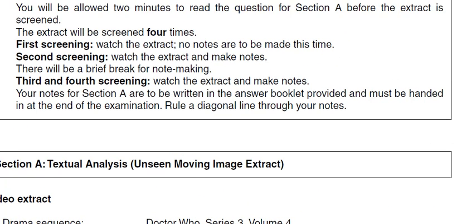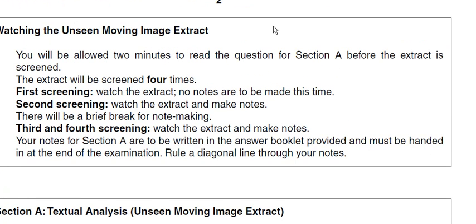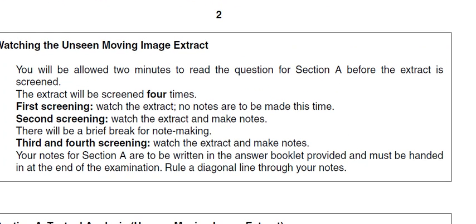Looking at section A first of all, this is the one where you're shown the TV drama extract and you're asked to write about the way something is represented in that extract. You get some instructions here about watching the unseen moving image extract. You'll be allowed two minutes to read the question first before the extract is screened, so you know what it is that you're looking for. Then you'll watch it four times — first time, watch the extract with no notes. Just watch it and think about it and get your first impressions.